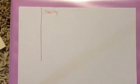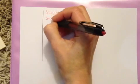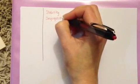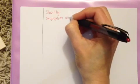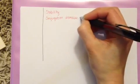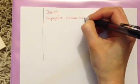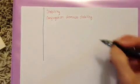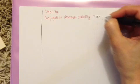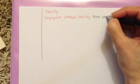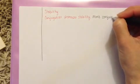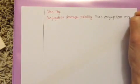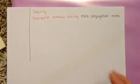In general, conjugation increases the stability of a molecule. The more conjugated a molecule is, the more stable it is. So if you have lots of conjugated double bonds, the molecule is very stable.